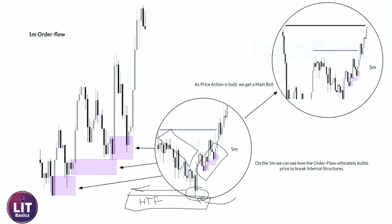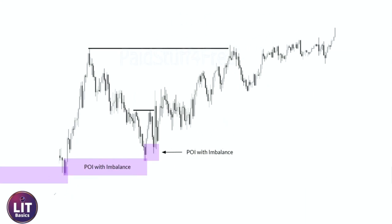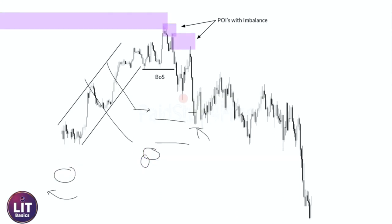That's another example. This one: we had a POI to the left, and then what you can see is we channeled down, mitigated here, and then we look for our break of structure after our cycle's been completed. So break of structure into mitigation, mitigation, mitigation, mitigation — all of our order flow mitigations. But again, we're not just trading them blindly — that's the important thing.